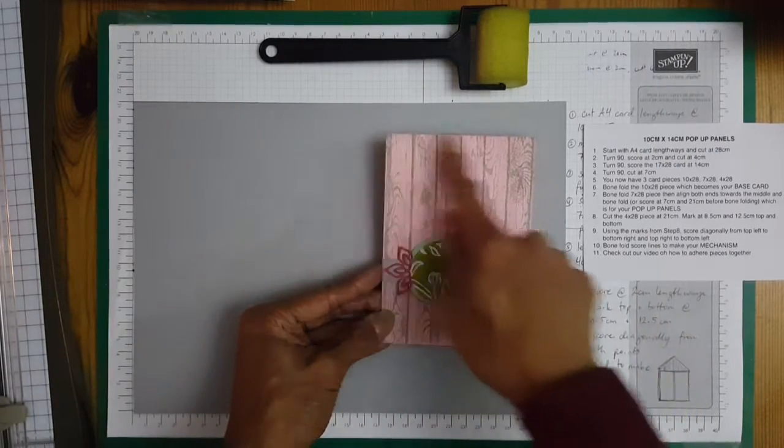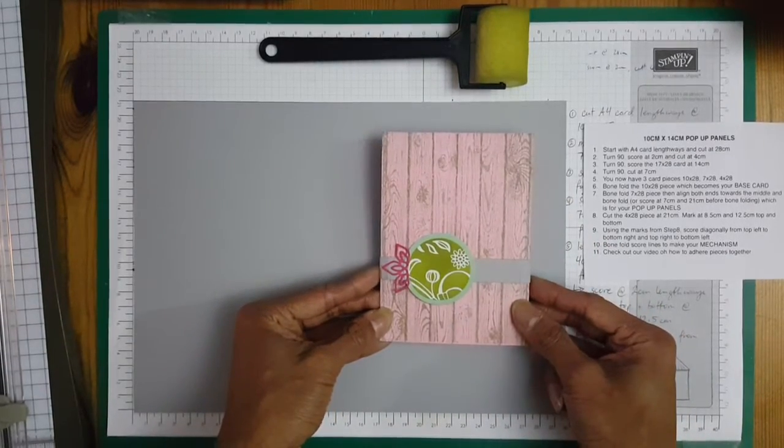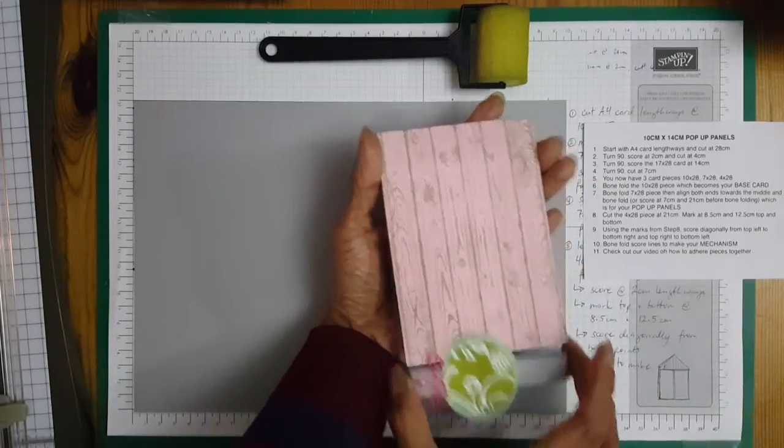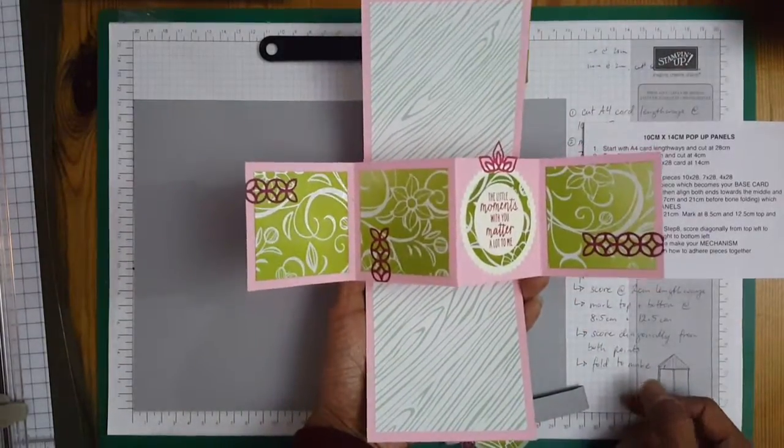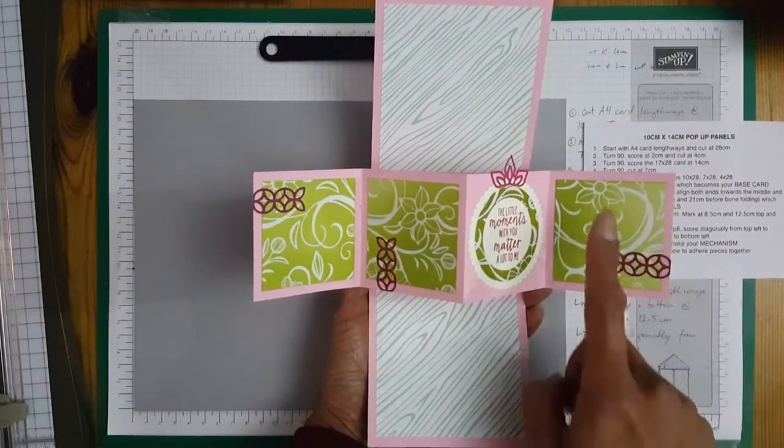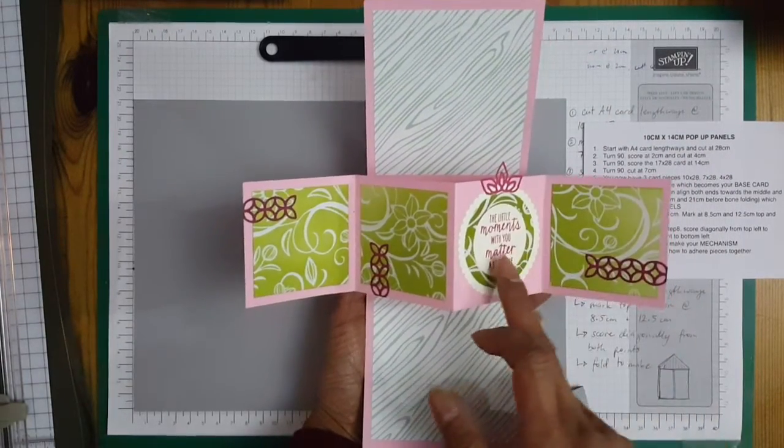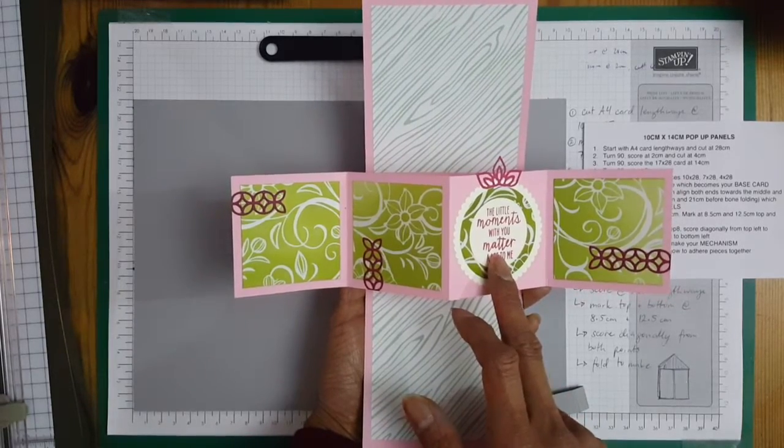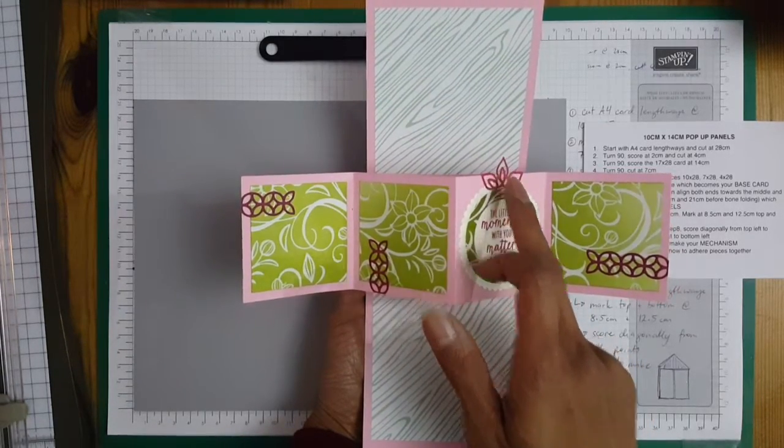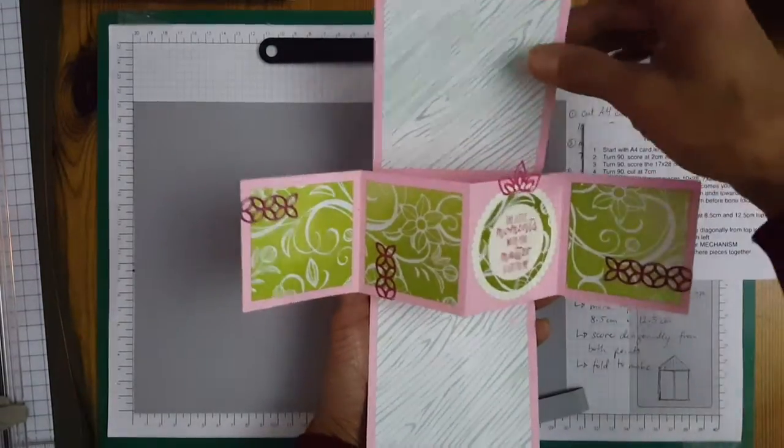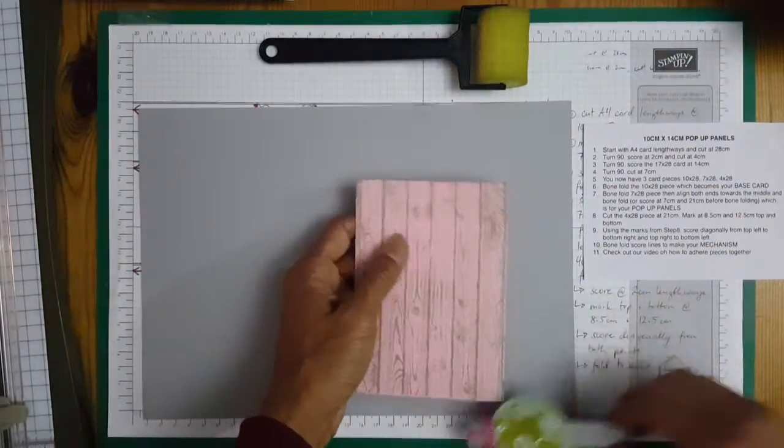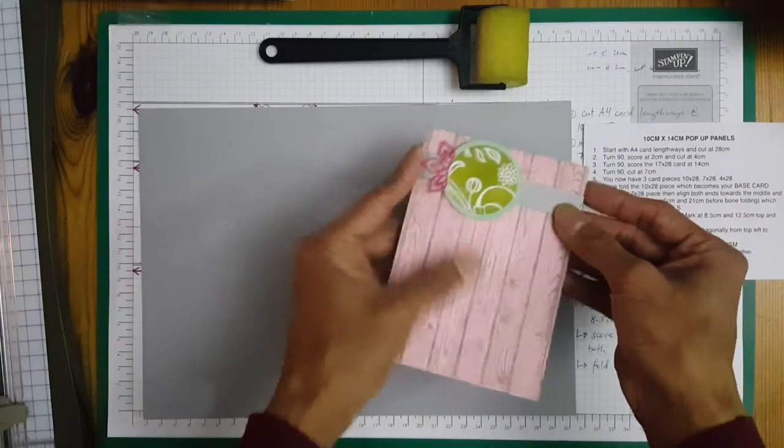So you'll be left with a 10 by 14 centimeter card that pops up. We've used the Irresistibly Floral DSP, Watercolor Wing stamp set for the sentiments, the Flourish Thinlits dies as well as the Layering Circle Framelits dies. I'll be recreating that but changing it up a little bit.